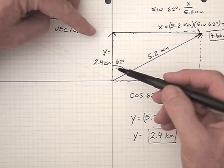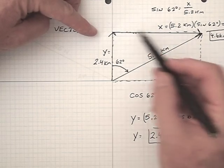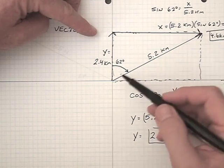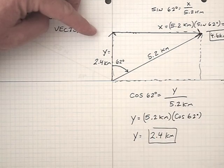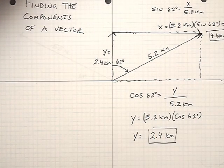You can see that the y component and the x component are two vectors which, when they are added head to tail, give the original vector. And that's the way to check your work.